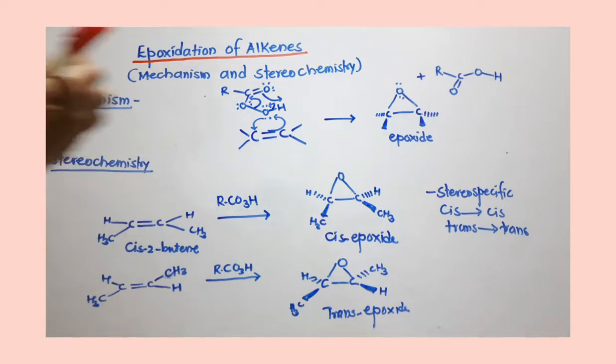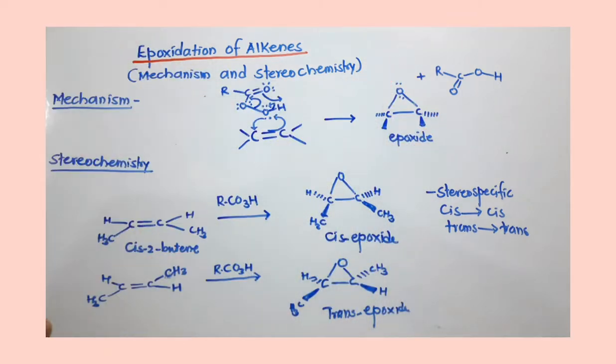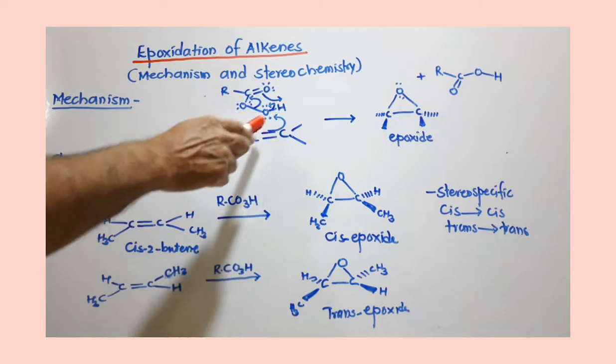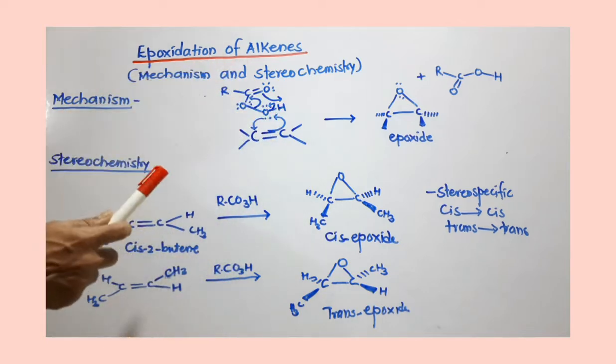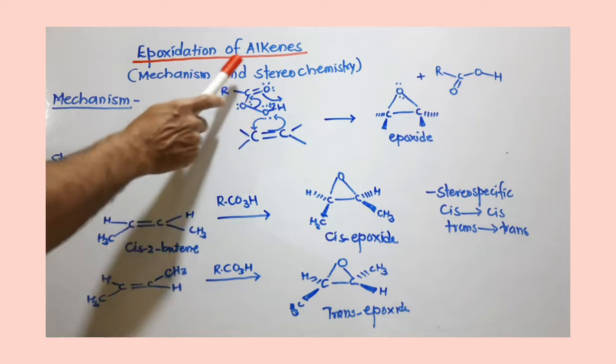So how alkene is converted into epoxide, ethylene oxide, or it is also called oxirane, by using a peroxy acid. This is peroxy acid, you can see here the peroxide linkage, OO linkage is there in this acid.